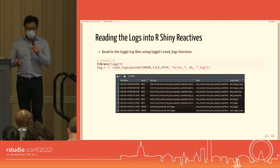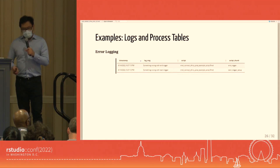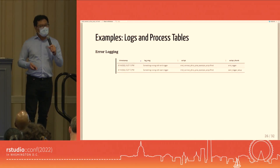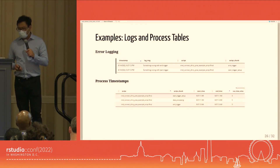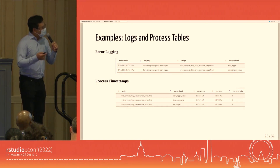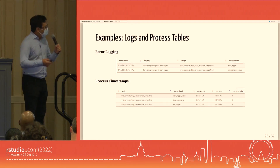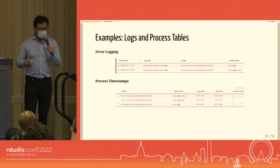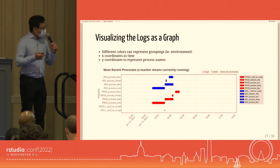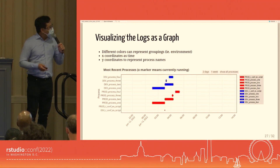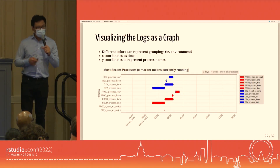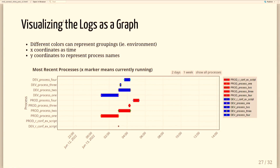We fed this data into a data table and built error data tables showing all errors in relation to each other — when they occurred and if they occurred within other processes. We also fed process logs into another data table: because we had Logit calls within each R Markdown chunk, we could see how long each chunk took and identify bottlenecks. We additionally fed process log data into Plotly to create graphs showing how processes were doing relative to each other and across development and production environments, allowing us to catch processes running much longer than expected before anything broke.